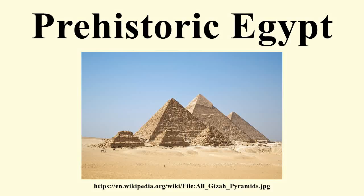The prehistory of Egypt spans the period from earliest human settlement to the beginning of the early dynastic period of Egypt in c. 3100 BC, starting with the first pharaoh Narmer. The pre-dynastic period is traditionally equivalent to the Neolithic period, beginning c. 6000 BC and including the protodynastic period. The dates of the pre-dynastic period were first defined before widespread archaeological excavation of Egypt took place, and recent finds indicating very gradual pre-dynastic development have led to controversy over when exactly the pre-dynastic period ended.